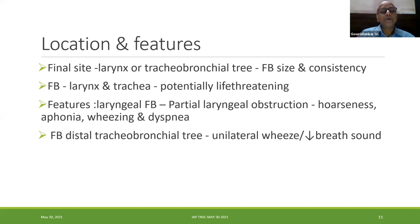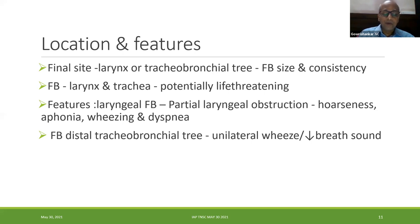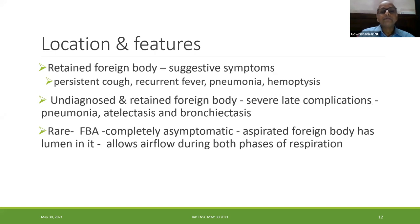Undiagnosed and retained foreign body has more chances for early as well as late complications including atelectasis and bronchiectasis. The final site of the foreign body — whether in the larynx or tracheobronchial tree — depends on its size and consistency. Anything in the larynx or trachea is potentially life-threatening due to central obstruction. Features include hoarseness, aphonia, wheezing, and dyspnea for partial laryngeal obstruction, or unilateral wheeze and decreased breath sounds for bronchial location.